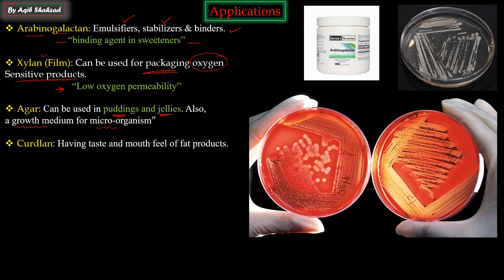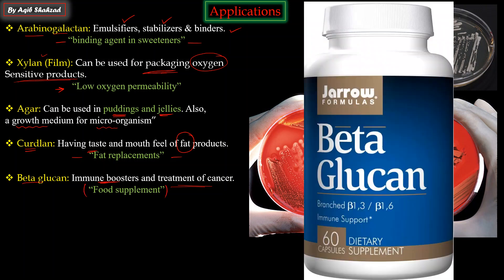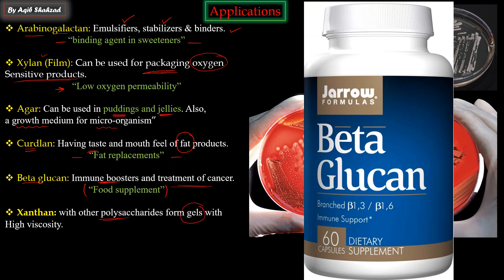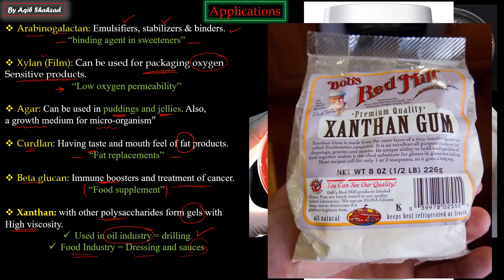Curdlan is another type of hemicellulose. Its taste is like fat, so it gives a fat-like mouthfeel, even though it is a sugar - making it a fat replacement in diets. Similarly, beta-glucan is used as an immune booster; it activates the immune system and is also considered for treatment of cancer, acting as a food supplement. Xanthan is another hemicellulose which, with other polysaccharides, forms gels due to its high viscosity. It is used in the oil industry for drilling, and in the food industry for making dressings and sauces.